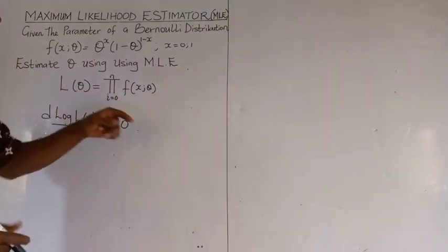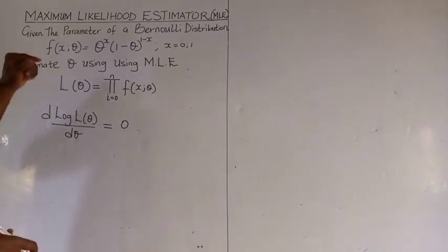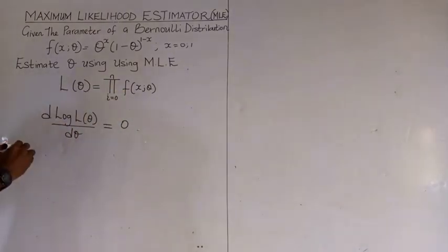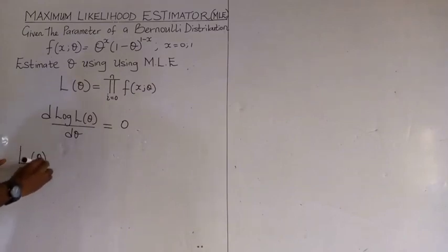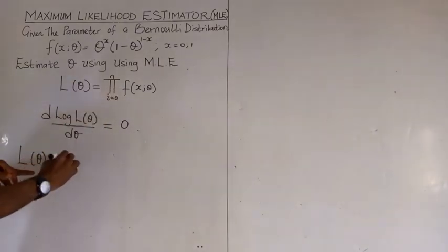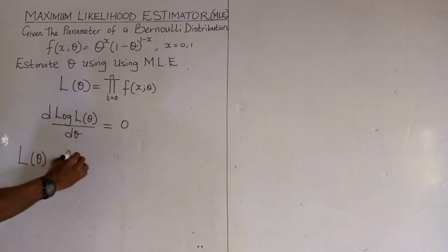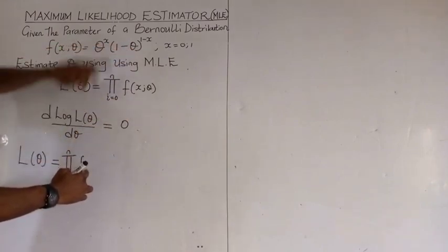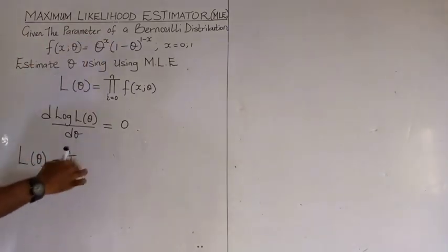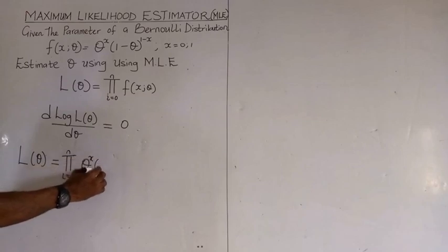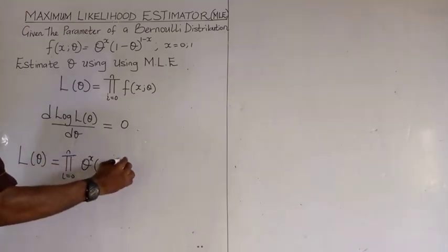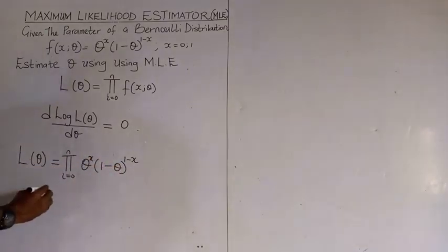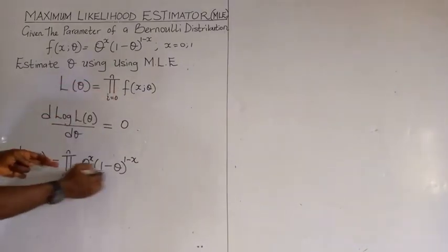We can even check if the estimator is actually an estimate. Let us start. What we do — we write the likelihood function, which is the estimator for this. We are seeing that this is the same function of the Bernoulli distribution. So what we do, we put the Bernoulli distribution here. We get something like this. Theta to the power of x, multiplied by 1 minus theta to the power of 1 minus x. We take the product of this.